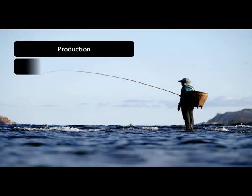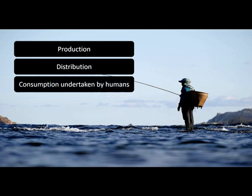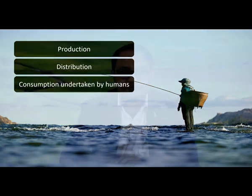The economy consists of the activities commonly referred to as production, distribution and consumption undertaken by humans. Not only is the economy a system of the ecosystem, it is also a subsystem of the larger set of activities that make up social life. It is within this interdependent relationship — the economy operating within the environment — that the concept of sustainable development arises.